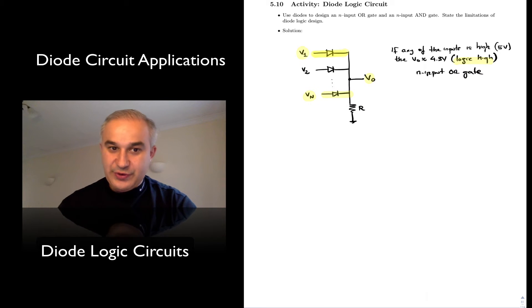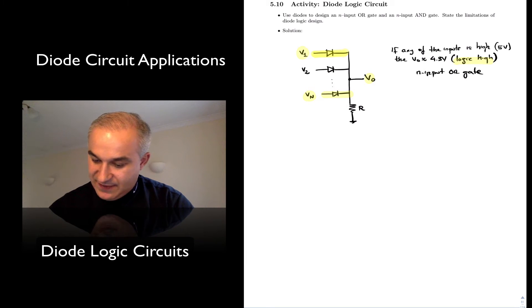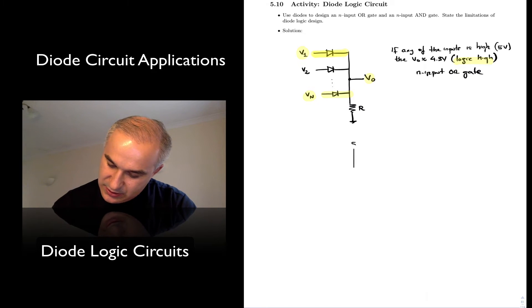We can also create an AND gate by tying this to 5V, some resistor, and then we tie the diodes to ground.